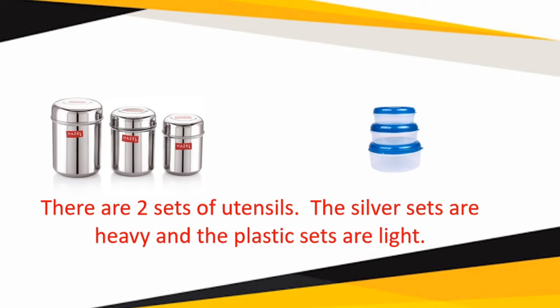There are two sets of utensils. One silver set and another is plastic set. When comparing the physical weight, the silver is more, so the silver set is heavy and the plastic set is light.